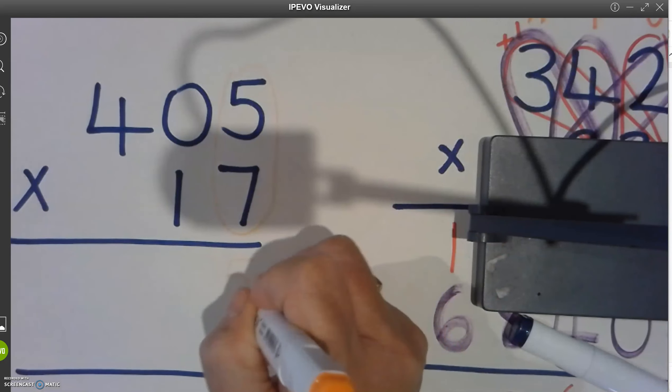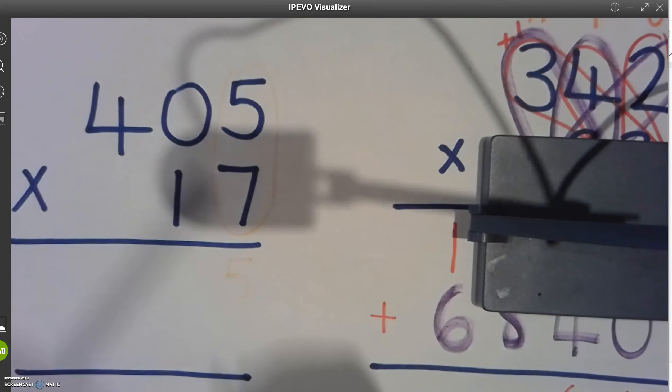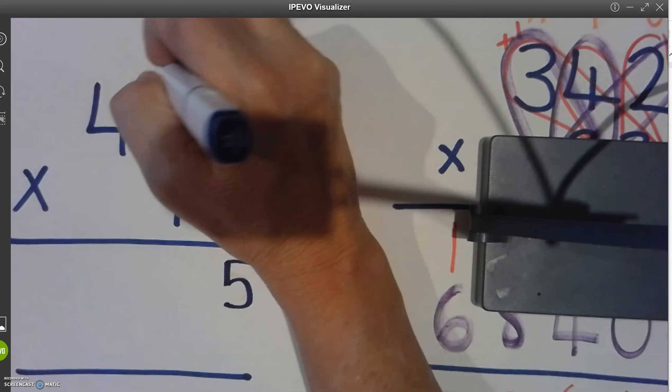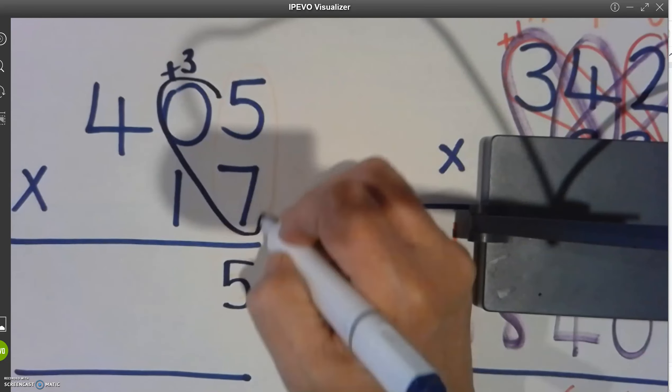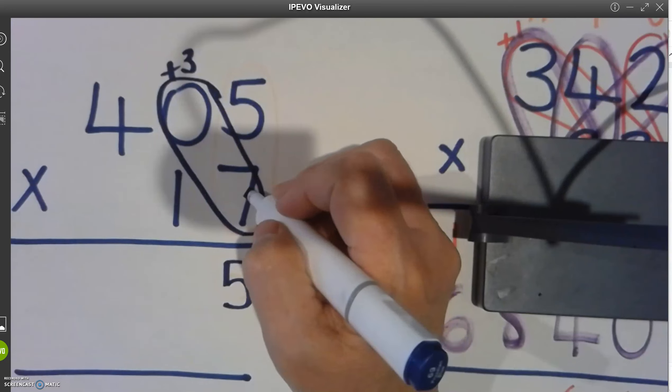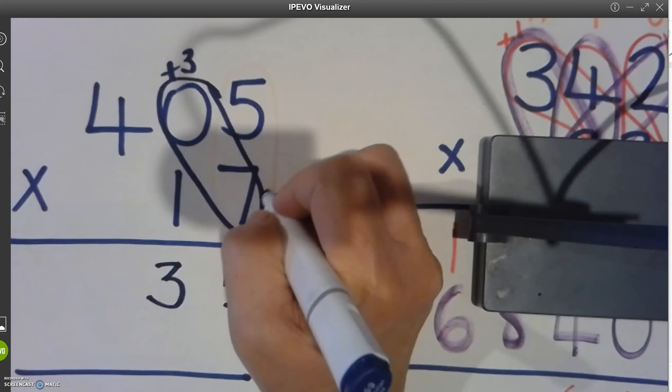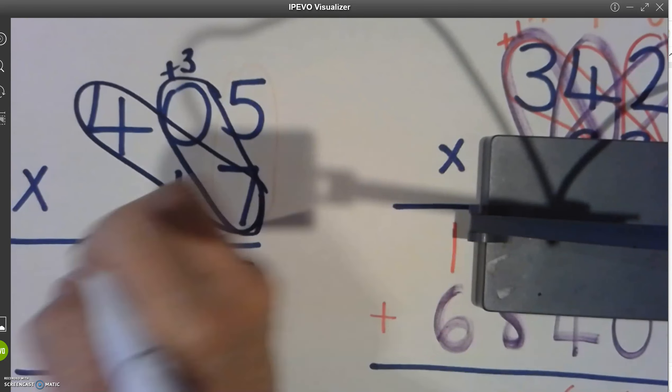Five times seven is thirty five. Five. We leave the ones. We add on the tens. Zero times seven is zero. And three, four times seven is twenty eight.